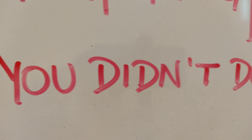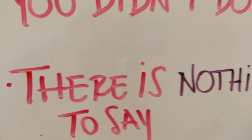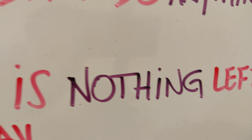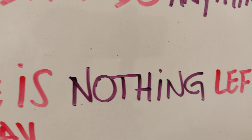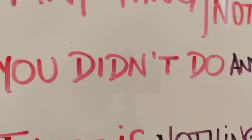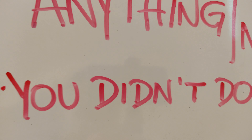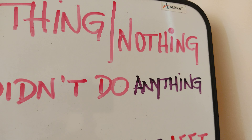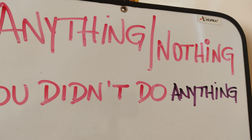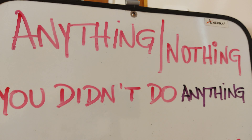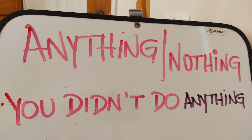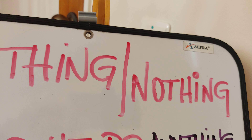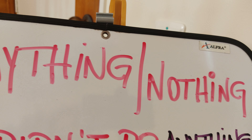Like in this sentence here: 'We didn't.' So, in this case, it's correct to say 'nothing.' But not here, like I showed you. 'You didn't do anything.' Anything. So, once again: anything, nothing — negative words.